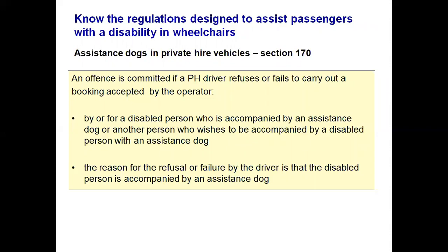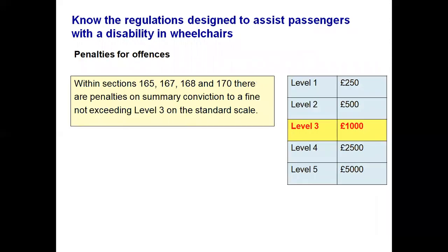Should a driver refuse to take an assistance dog and the dispatcher gives the job to another driver, not only is the original driver committing an offence under Section 170, but the operator is also committing an offence by condoning that driver's behaviour. Within Sections 165, 167, 168, and 170, penalties on summary conviction include a fine not exceeding Level 3 on the standard scale — a maximum of £1,000. However, police authorities could also take action under the Equality Act 2010, which carries a maximum of a two-year prison sentence. So you could be jailed or fined.